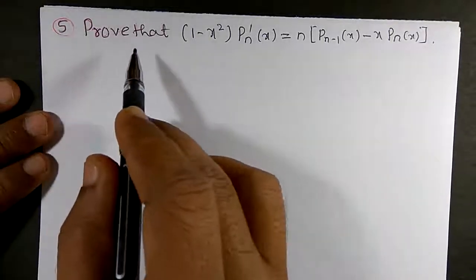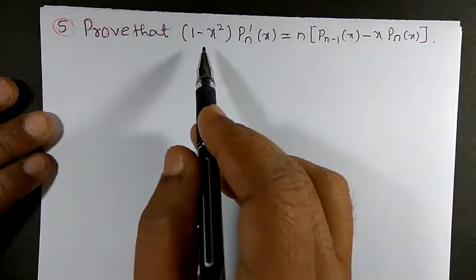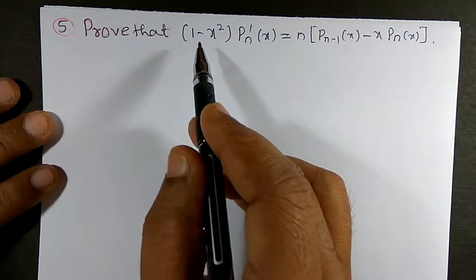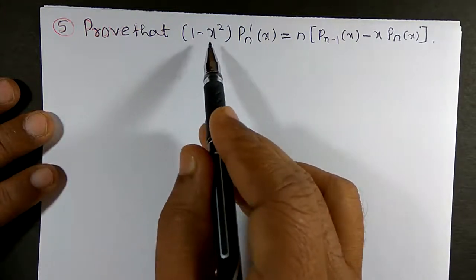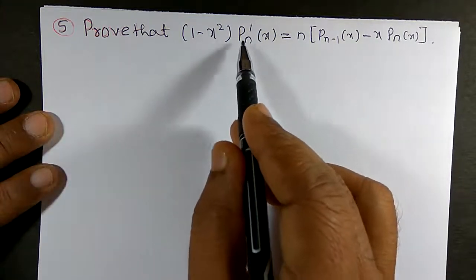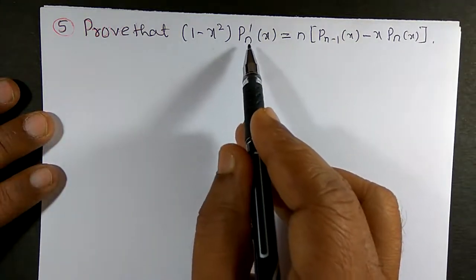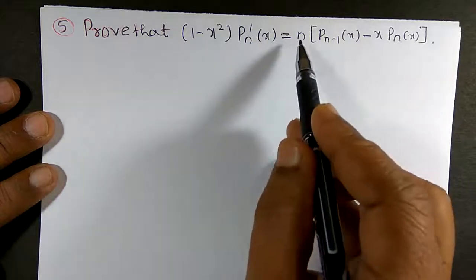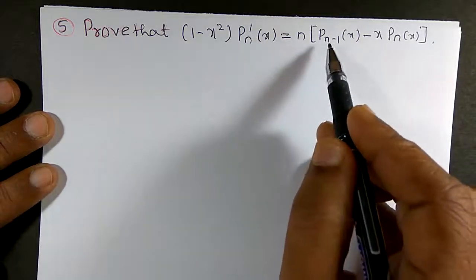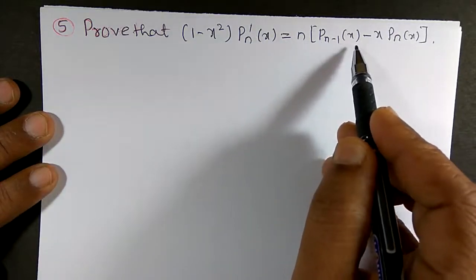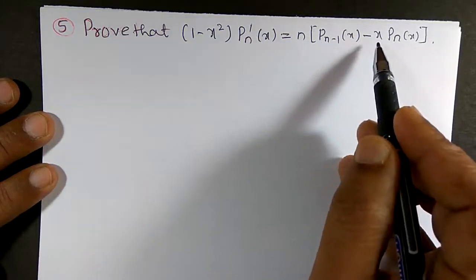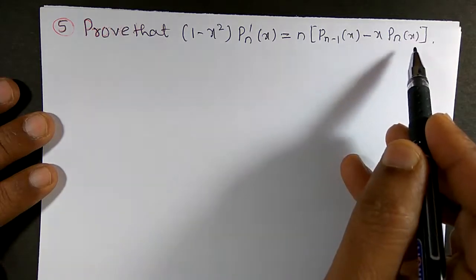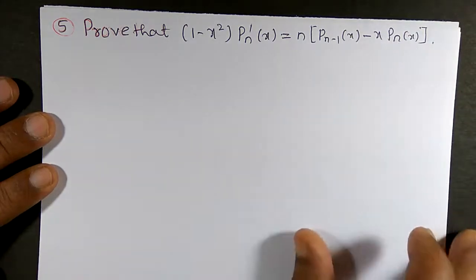Hello friends. Now I want to prove another recurrence relation, namely: (1 - x²) · P'ₙ(x) = n · Pₙ₋₁(x) - x · Pₙ(x).